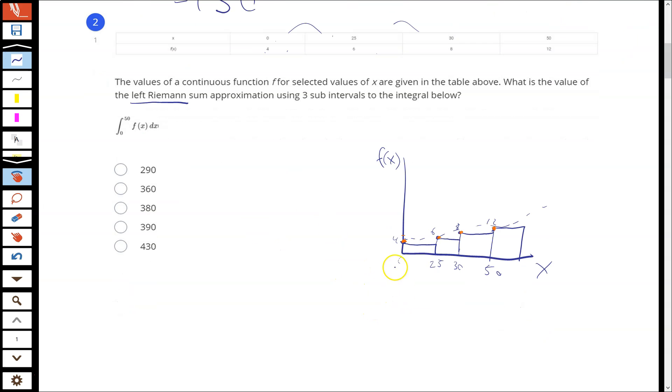In this particular problem, we're going to do base times height all the way across. So 4 times 25 for the first rectangle, plus 6 times 5, plus 8 times 20. We'd say the integral from 0 to 50 of f of x dx, and then we do squiggly equal sign because it's an approximation. When you do that math, you get 290. So that is our left Riemann sum.